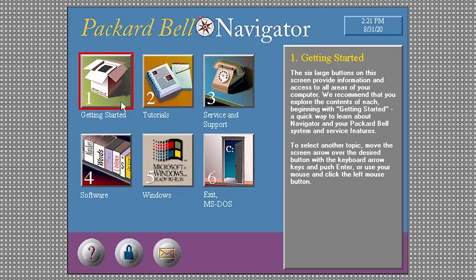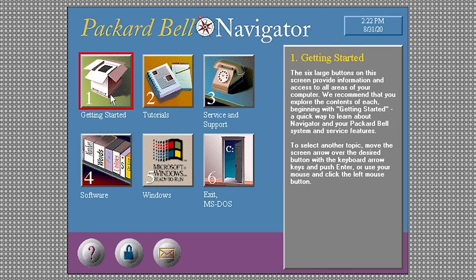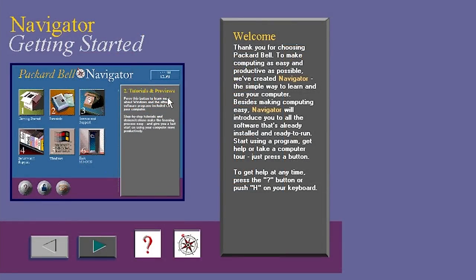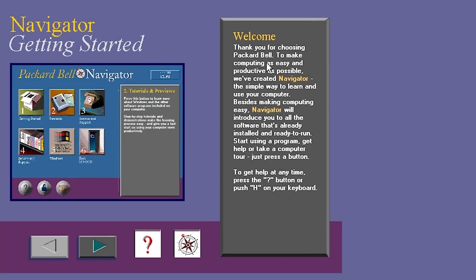Let's dive into Packard Bell Navigator 1.0. You've got these six menu options, the date and time at the very top, and when you mouse over these menu options, you get a brief description of what each of them do. Starting with number one — Getting Started — this launches a full screen application. It's up in the top left corner because we're running this virtual machine at a slightly higher resolution.